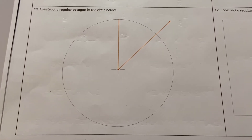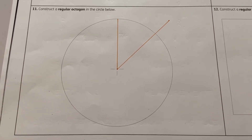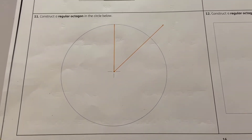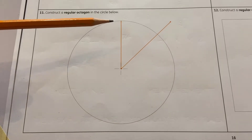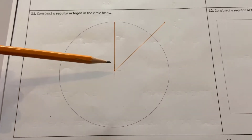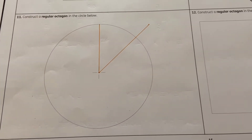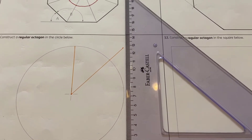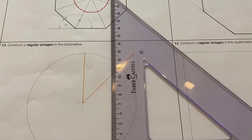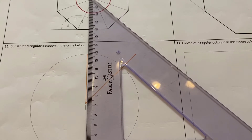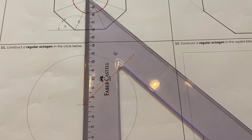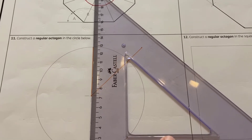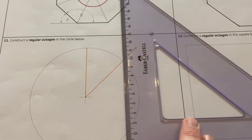Moving on to the next question: we are asked to construct a regular octagon in the circle shown below. The first thing to do is draw a vertical line from the center of the circle to the circumference. To do that, place your set square against a T-square or a horizontal line on the sheet, then from the center of the circle extend a vertical line to hit the circumference.